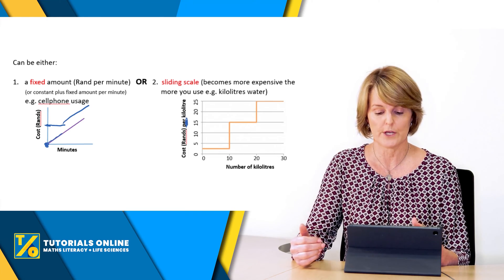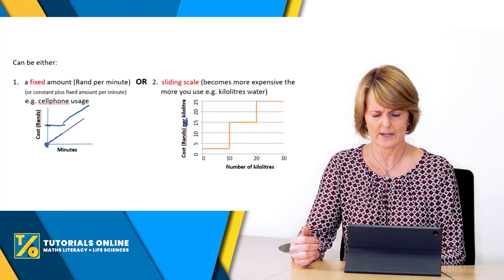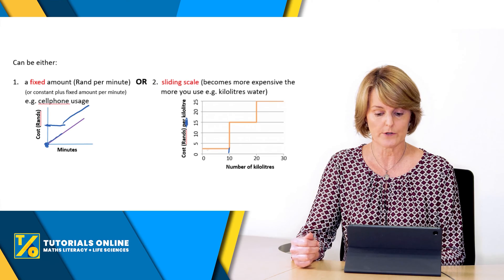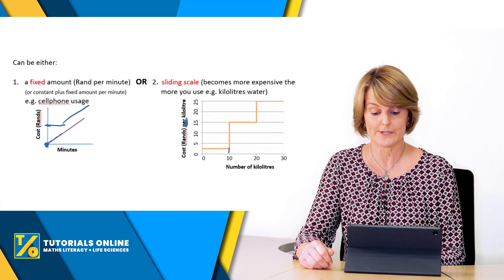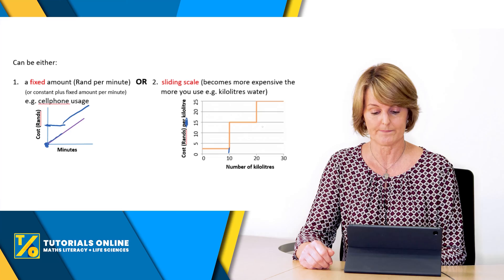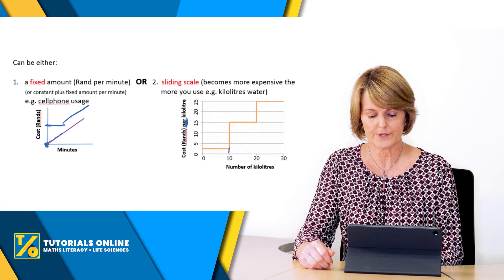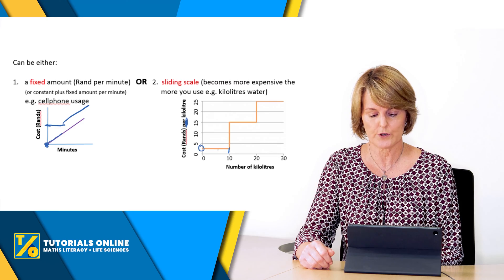What that means is that it's becoming more expensive per kilolitre, then it becomes more expensive the more you use. So initially, let's say up to 10 kilolitres you can see here it's quite a low amount, but then if you suddenly start using 11 or 12 or 13 kilolitres it jumps.